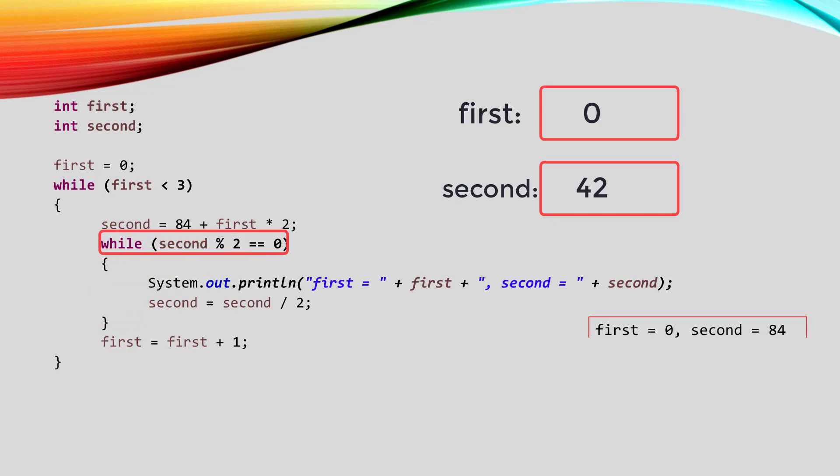So the condition in the loop is going to be checked again. Second mod two is the remainder after we divide 42 by two. Since two goes evenly into it, the remainder is zero, because there is nothing left. So the condition will be true, and we will go inside the loop again.